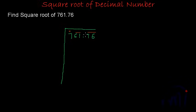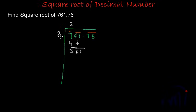So we will follow the same procedure. We have to find the biggest number whose square is smaller than 7 — so 2 is the biggest number. I'll write 2 in the quotient and 2 as the divisor as well. 2 squared is 4; if I subtract, I get 3 as remainder. Then I bring down 61 to make the next dividend, and I add the quotient digit 2 to the divisor: 2 plus 2 is 4. I leave a place for the next digit in the divisor.